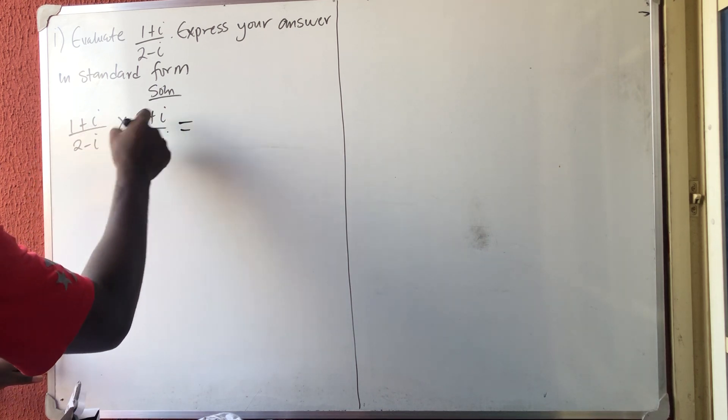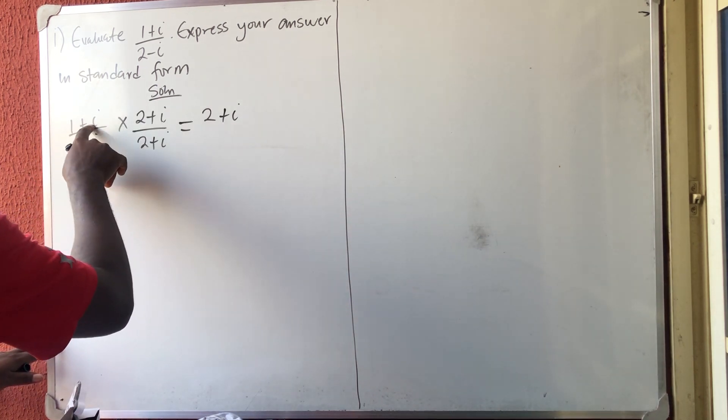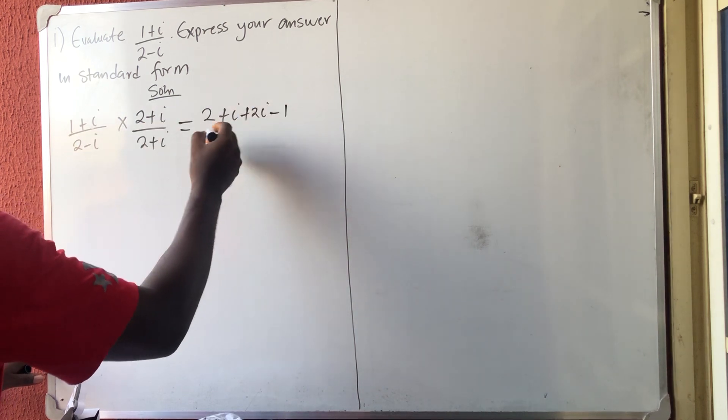So you now multiply: 1 times 2 is 2, 1 times i is i, i times 2 is 2i, then i times i is minus 1.